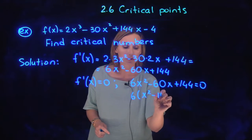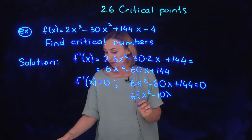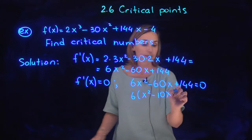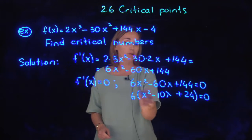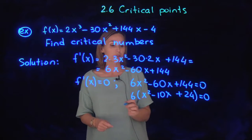x squared minus 10x plus 24 equals zero. Now quadratic trinomial. How to factor it?